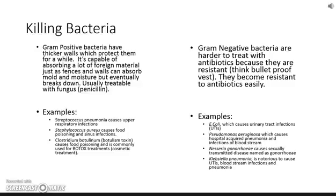Gram negative bacteria on the right are harder to treat. Things like E. coli, which can cause urinary tract infections and upset stomach diarrhea. Pseudomonas aeruginosa, which can cause hospital-acquired pneumonia. Neisseria gonorrhoeae, a type of sexually transmitted infection. And Klebsiella pneumoniae, which is another urinary tract infection cause. Those are harder to treat and take stronger antibiotics.